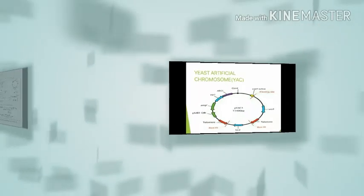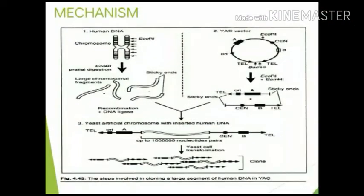I'm coming to the next slide, which is the mechanism or technique of cloning in the YAC vector with human DNA. In step one, we can take any gene of interest, commonly human DNA. The human DNA is cut with restriction endonucleases like EcoRI, which cuts this human DNA into pieces.